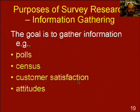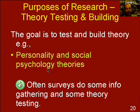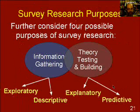We can break these two broad purposes down into four specific goals. Some examples of information gathering may be polls, census type data, customer satisfaction surveys, and attitude surveys. In the case of theory testing, we might be talking about testing something like personality or social psychology theories. While we can draw those distinctions, it's also true that often surveys do a bit of both information gathering and theory testing.